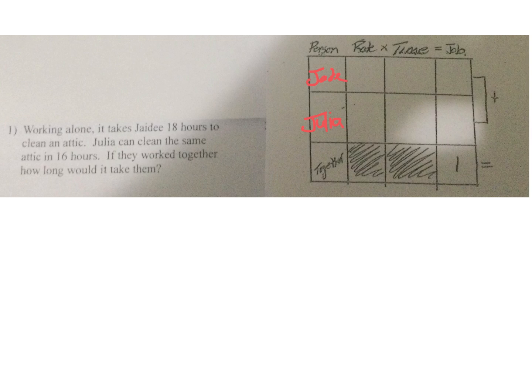Jade works at a rate of 1 job in 18 hours. This job is one complete job. Julia works in 16 hours, so 1/16th. If they work together, how long would it take them? The time is T for both because they are working together. So I get T/18 plus T/16, and I'm going to add those two and equal them to 1.